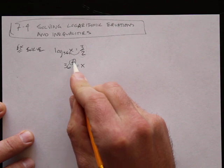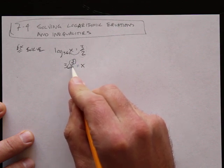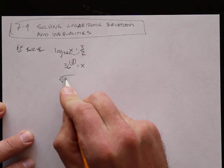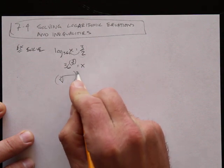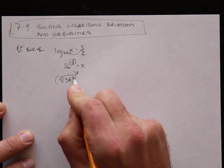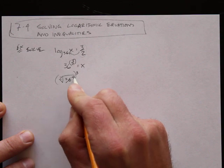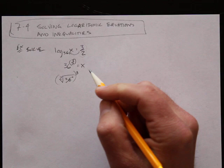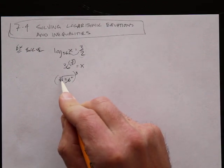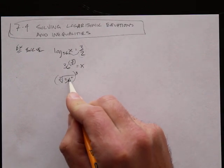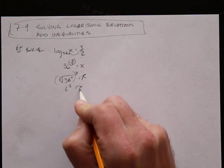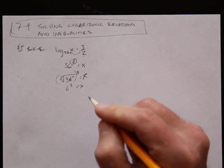I take this 3 over 2 — the denominator goes right here, and the numerator goes right here. Or it can go inside the radical sign, or it can go outside. Either way is the same. So I take the square root of 36, which is 6. 6 cubed equals x. 6 cubed is 216.